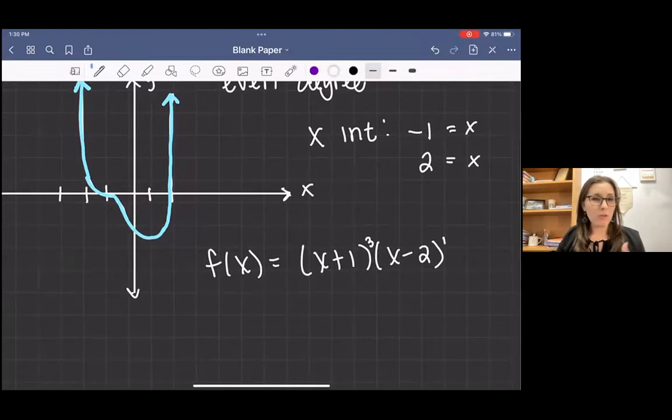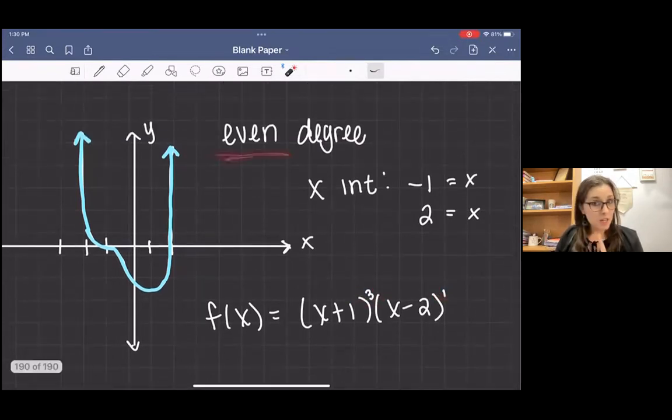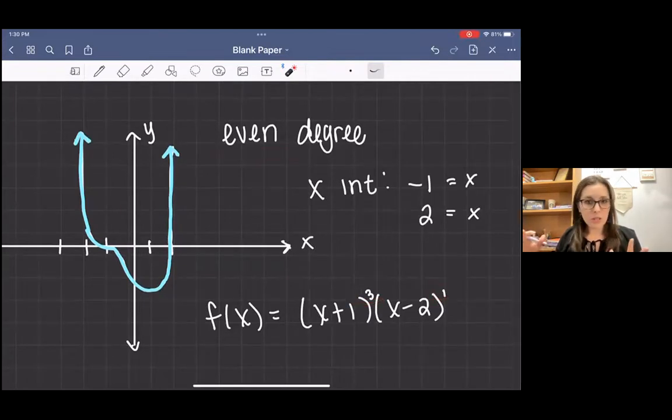So the exponent on that factor would be a one. We don't have to write the one, but for the sake of the lesson, I'm going to write one. Then when I add up my exponents, it should be even. If it's not even, then I've done something wrong. So three plus one is four, even degree, two x-intercepts, positive coefficient, done.